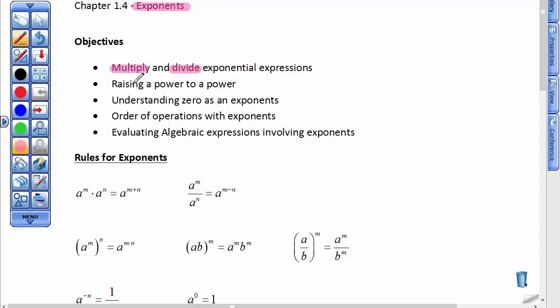We're also going to raise a power to a power. That's this third option right here, a to the m power raised to the n power. And we're going to look at that shortcut and the shortcut is to just multiply this exponent times this exponent to get your answer. We're going to understand zero as an exponent, order of operations with exponents, look at negative exponents, and then evaluate algebraic expressions that involve exponents.